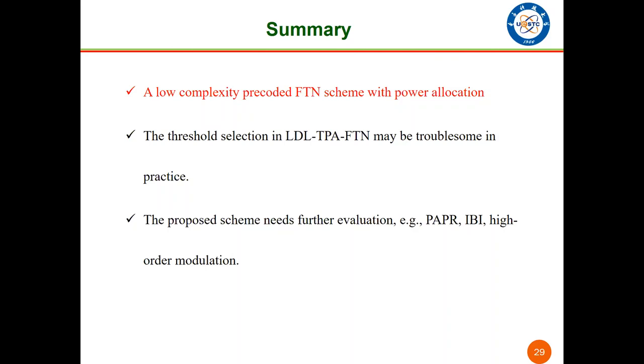For example, the peak-to-average power ratio is a universal problem for the pre-coded FTN schemes. The inter-block interference also should be considered and compared with other schemes, and the proposed scheme can utilize higher-order modulation to further improve the spectral efficiency. That's the end of my presentation. Thank you.